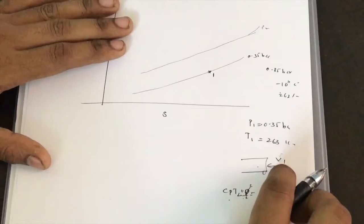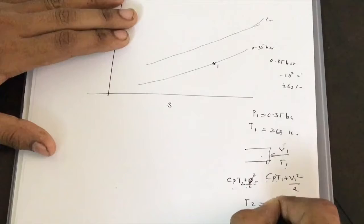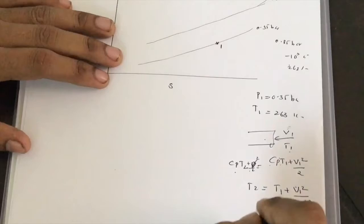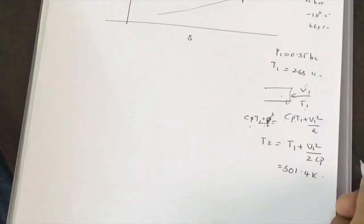Applying the steady flow energy equation: Cp·T1 + V1²/2 = Cp·T2, since velocity at Point 2 is zero. Therefore T2 = T1 + V1²/(2·Cp). Substituting the values gives T2 = 301.4 Kelvin.